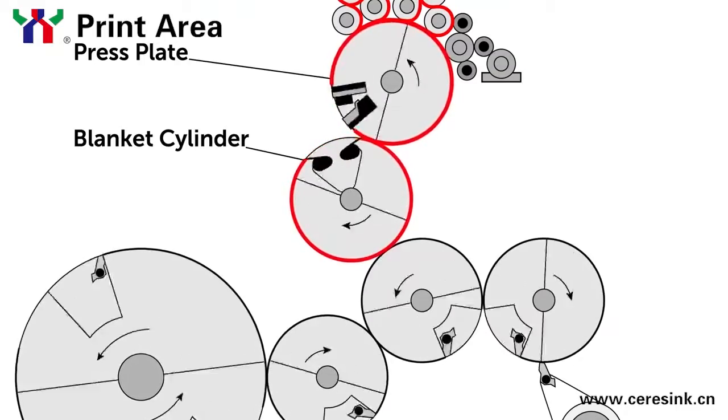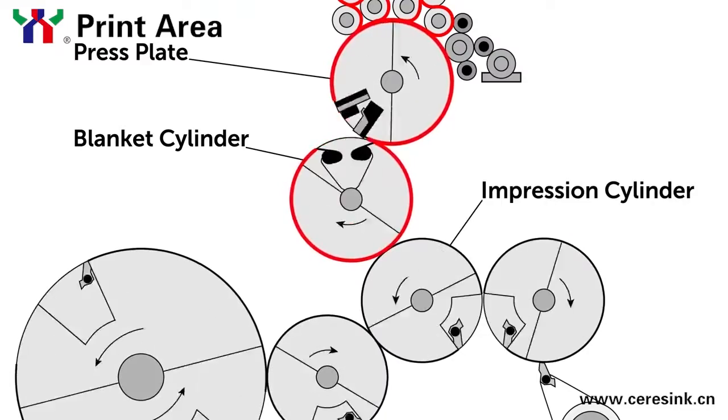The water and the inked image area is picked up. It is then passed to the final cylinder called the impression cylinder. The paper runs between the impression cylinder and the blanket cylinder, pressing the image onto the paper.